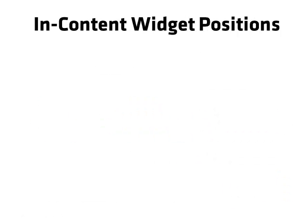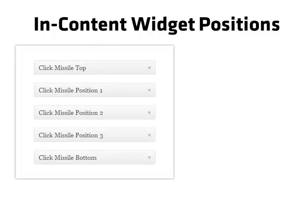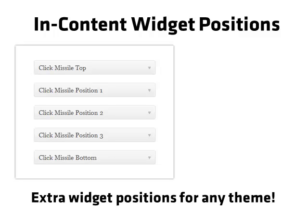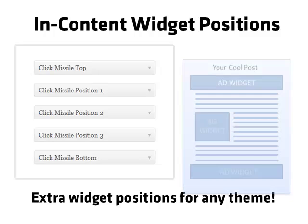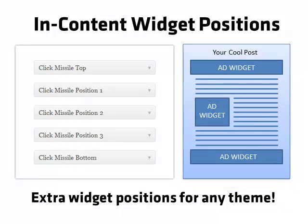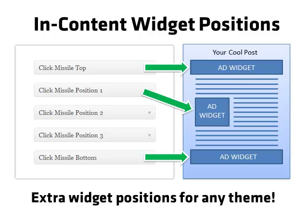The next feature is the In Content Widget Positions. While most WordPress themes just provide widget positions in the sidebars, Click Missile actually adds extra widget positions to any theme right within the post content itself. For example, if you want to place an ad widget right at the top of your posts, you could use the Click Missile top widget position. If you wanted an ad widget at the bottom of your posts, you could use the Click Missile bottom position. And if you wanted the ad widget injected right after the first paragraph, you could use Click Missile position 1. Click Missile also allows ad widget injection after the second and third paragraphs too.